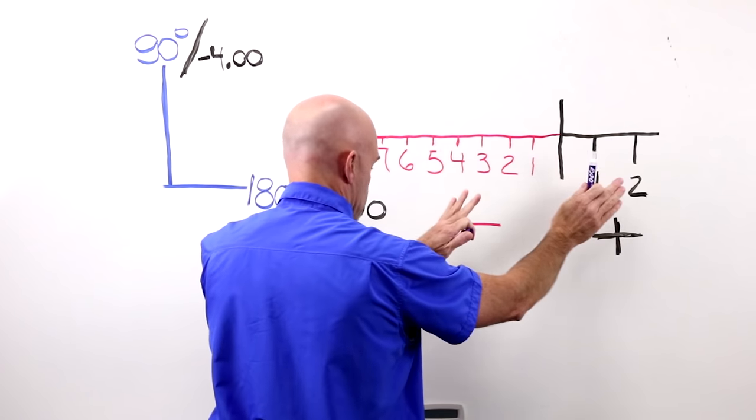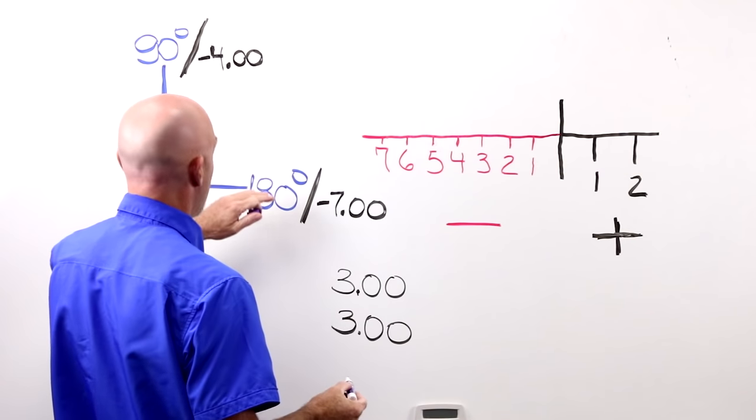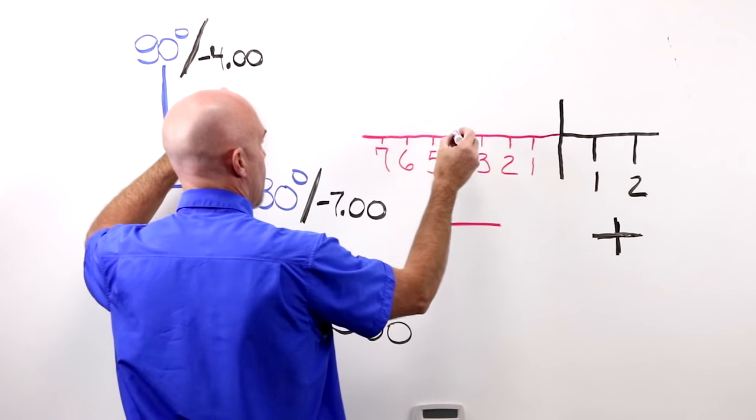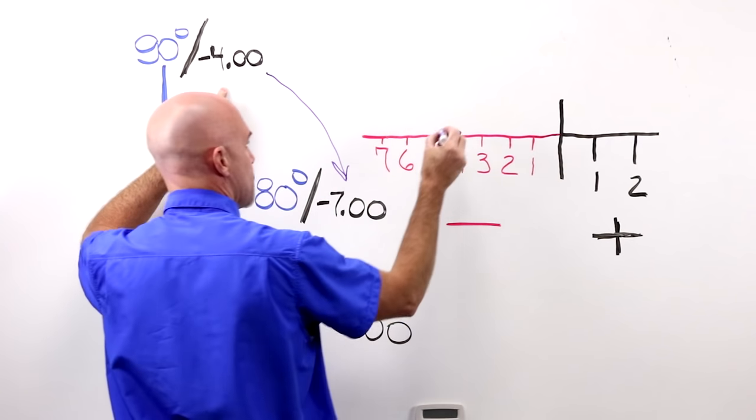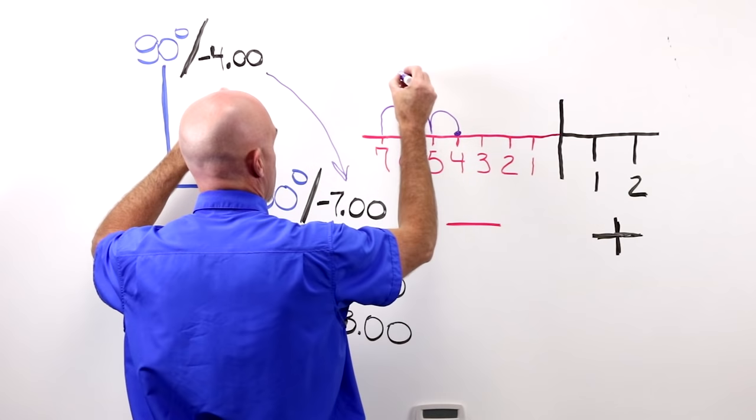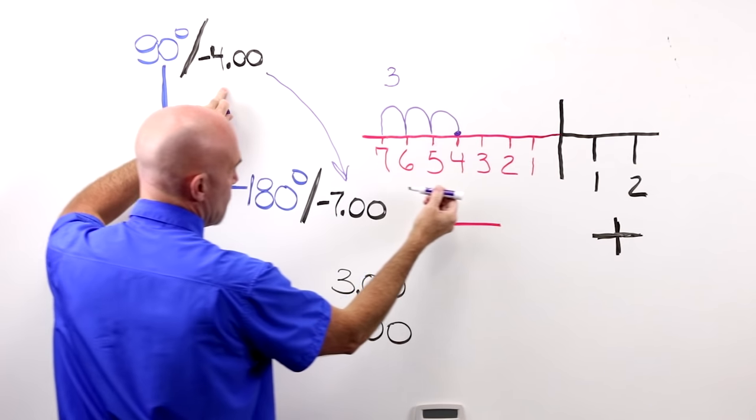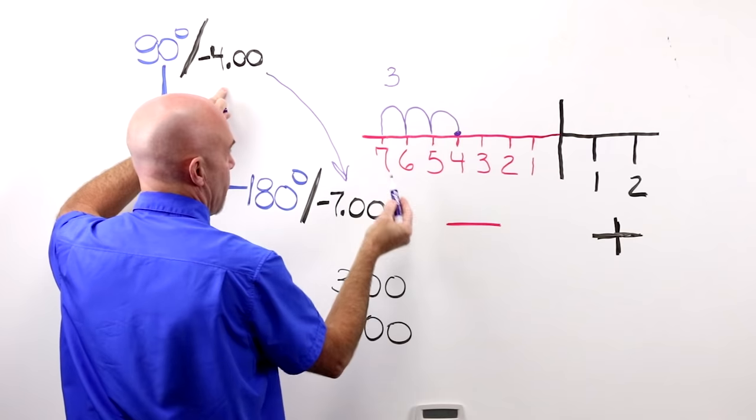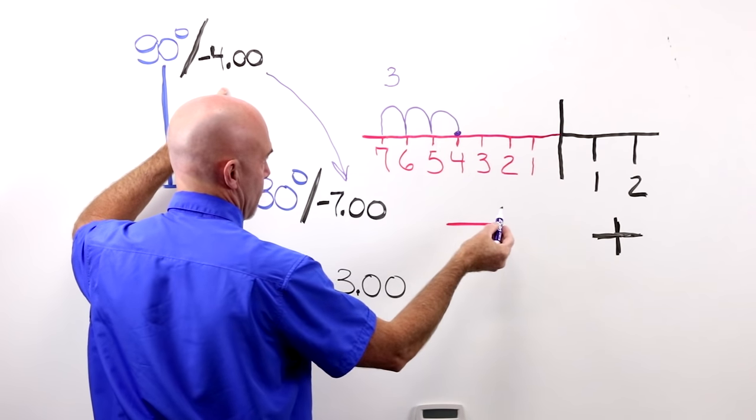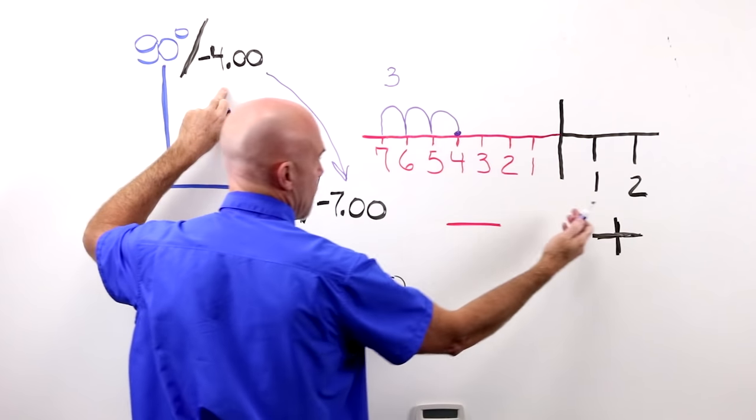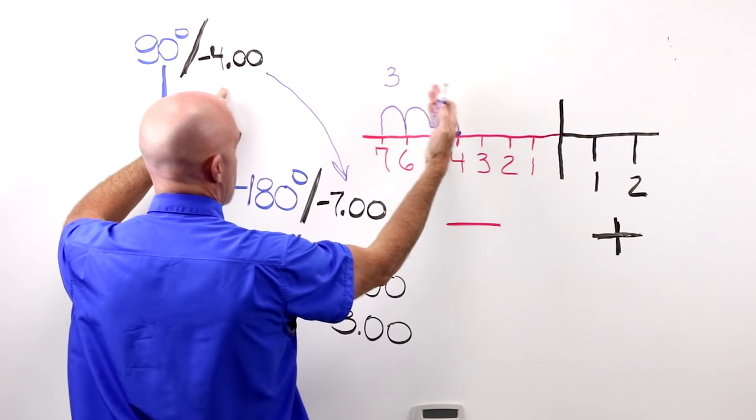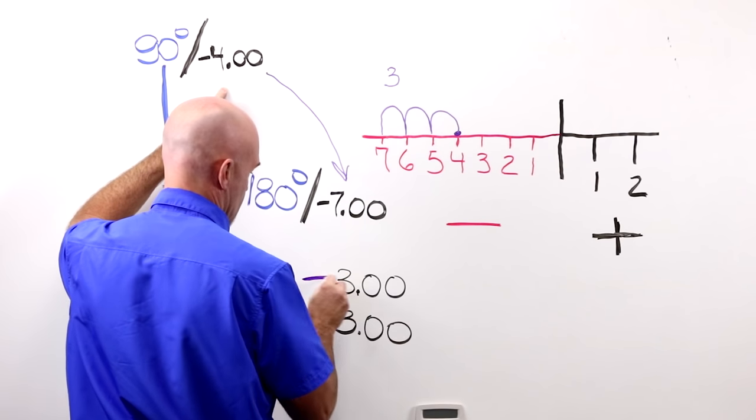Lensmeter, drum, number line. So, if I'm at minus four, and I go to minus seven, one, two, three diopters, I'm moving in a more minus direction. Minus seven is more minus than minus four is. It is further away from plus. My sign for the four to the seven would be the minus three.